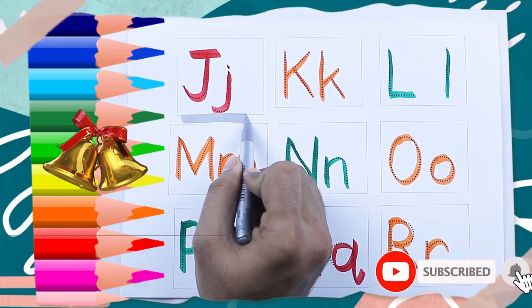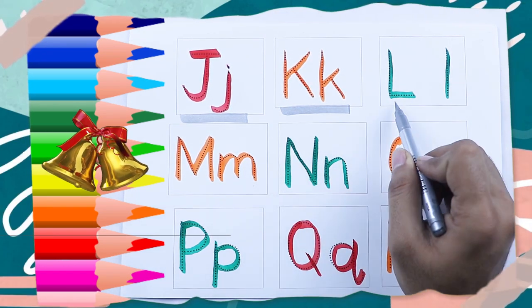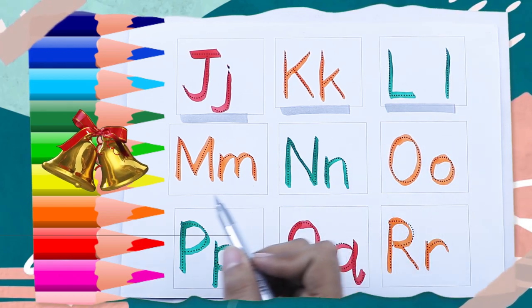Red color J, J for jack, orange color K, K for kite, green color L, L for lion.